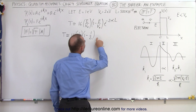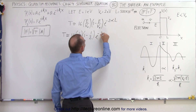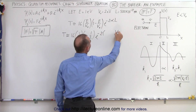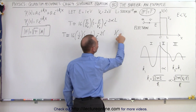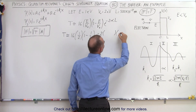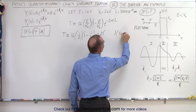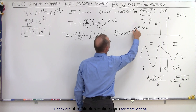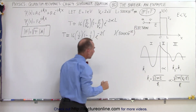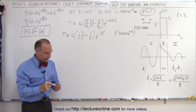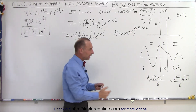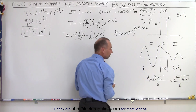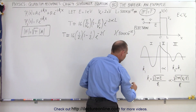Over here we have e to the minus 2 times alpha times l. We'll leave this blank for now. L is 500 times 10 to the minus 12 meters. Now, what is alpha? Alpha is obtained from the formula, and we need to plug in values to find it.